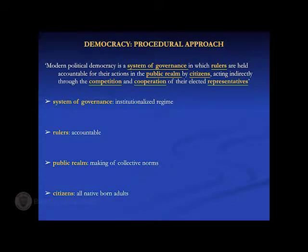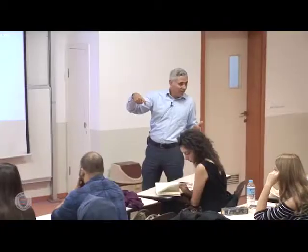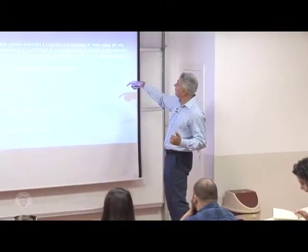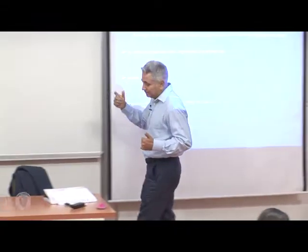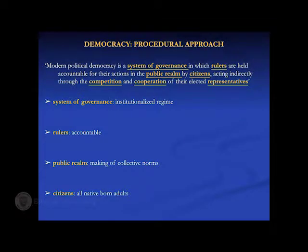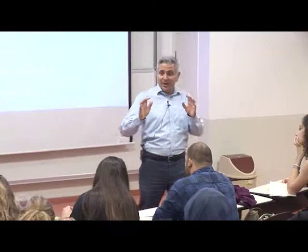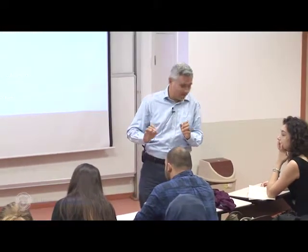Modern political democracy is a system of governance in which rulers are held accountable for their actions in the public realm by citizens who are acting indirectly through mechanisms or procedures of competition and cooperation of their elected representatives. The issue is that we have these component procedures, all of which are sine qua non of the system, in the sense that all of them have to coexist simultaneously.